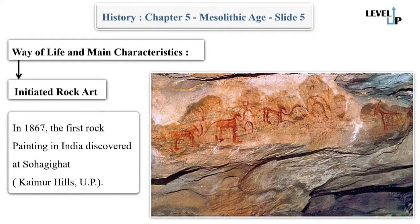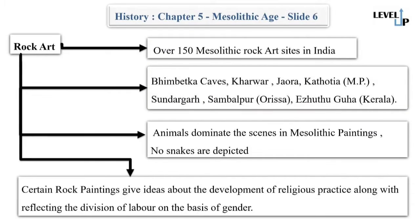Mesolithic people had artistic skill, and the Mesolithic era initiated rock art in prehistory. In 1867, the first rock paintings in India were discovered at Suhagia Ghat, Kaimur Hills, Uttar Pradesh. Now over 150 Mesolithic rock art sites have been discovered across India, with concentration in central India — such as the Bhimbetka caves, Karwar, Jawra, Kathotia, Sundagar, Sambalpur, and Azutu Guha in Kerala. Animals dominate the scenes at most Mesolithic rock art sites; however, no snakes are depicted in Mesolithic paintings. Certain rock paintings also give ideas about the development of religious practices and reflect the division of labor on the basis of gender.